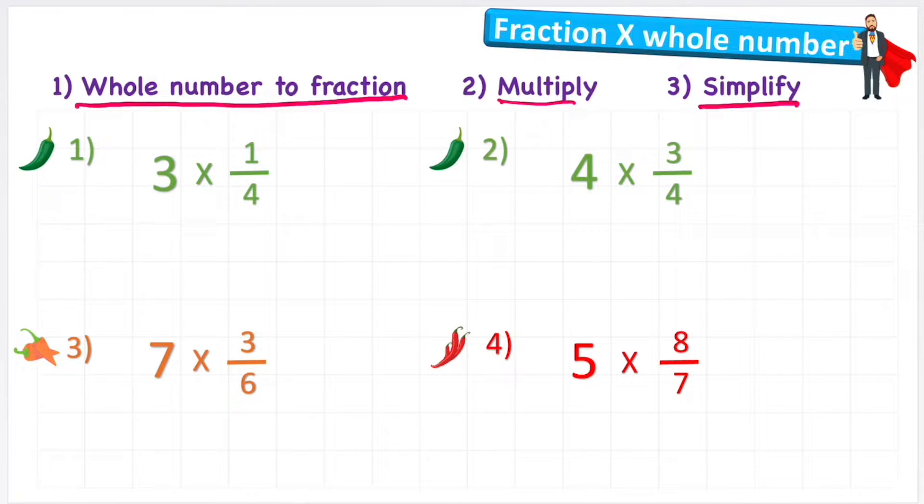My first example says 3 multiplied by 1 quarter. So at the moment this looks very tricky to do because we have a whole number and a fraction and they don't multiply very easily. So what we need to do is follow step 1 and we're going to convert the whole number to a fraction.